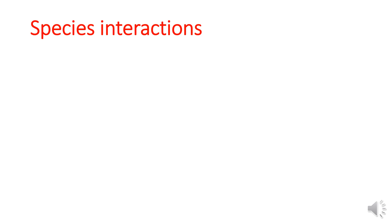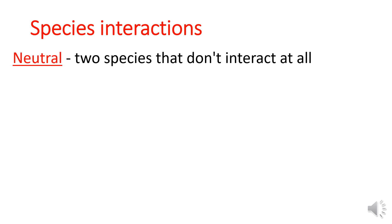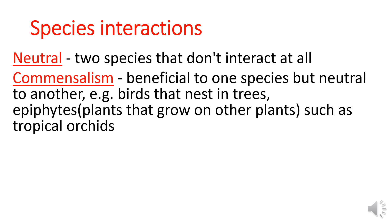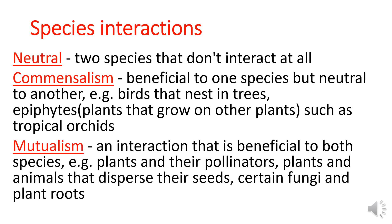Species interactions include: neutral — two species that don't interact at all; commensalism — beneficial to one species but neutral to another, like birds that nest in trees, or epiphytes — plants that grow on other plants, such as tropical orchids; and mutualism — an interaction that is beneficial to both species, like plants and their pollinators, plants and animals that disperse their seeds, and certain fungi and plant roots.